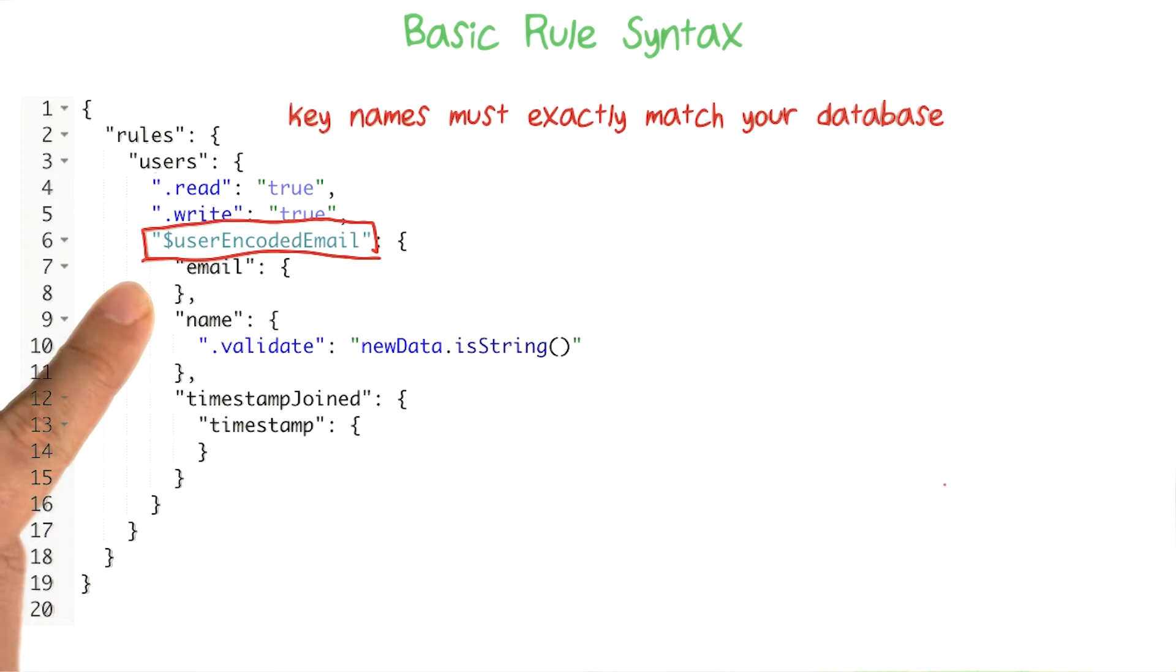Now you might be wondering what this key here is all about. The dollar sign followed by a word indicates what is known in Firebase as a wildcard variable. Now wildcard variables have a couple different uses, but the most common one is to represent dynamic keys, like push IDs, and in this case, user emails. Because remember, under the user node is a list of user emails, the keys of which we can't guess in advance.